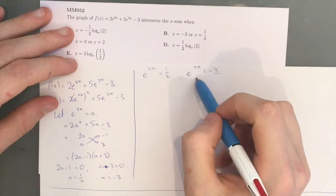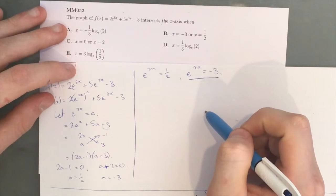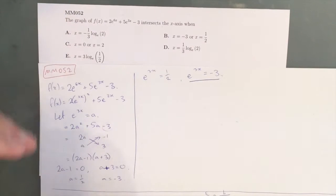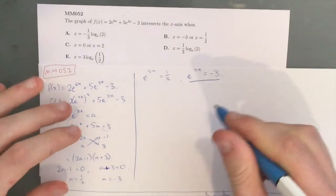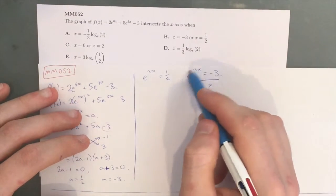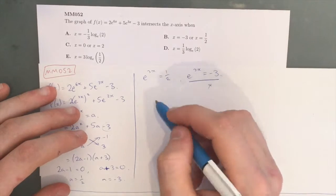This is not correct. That doesn't have a real answer, because you can never have a negative answer as an output from an exponential. So, we just exclude that from our answers.